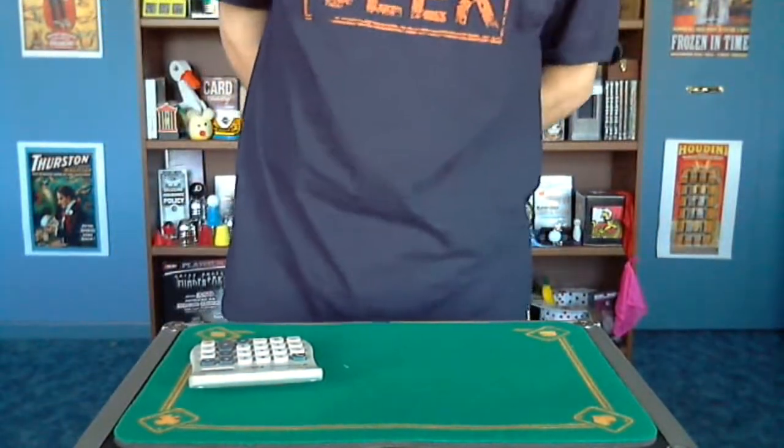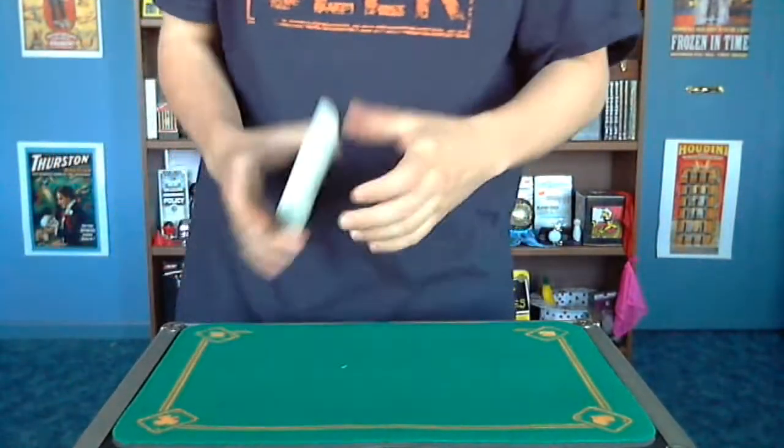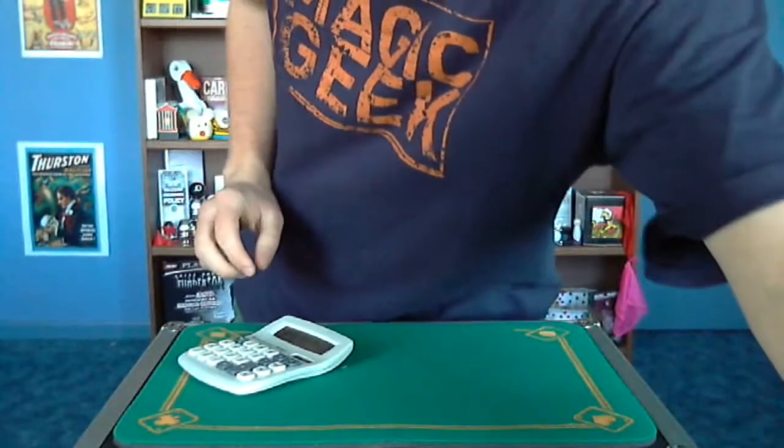Alright, hello everybody, it's 444RR with the next video on the 365 day magic challenge. Today's trick involves a calculator and Renaissance dice.